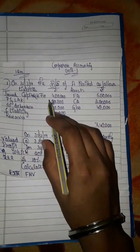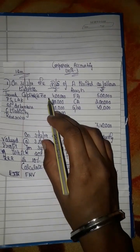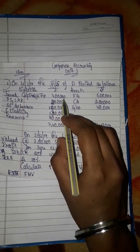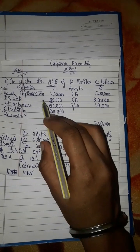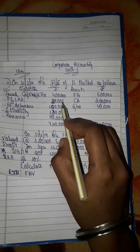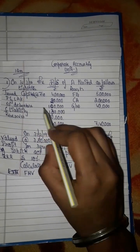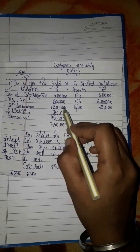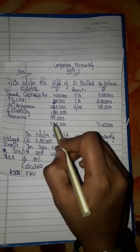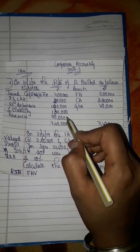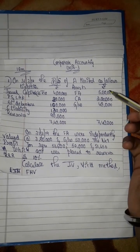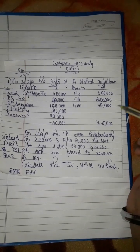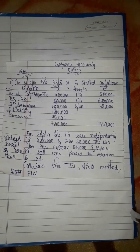The issued capital — equity shares — is 4 lakhs. The profit and loss account is 20,000. The 5% debentures is 1 lakh, and the reserves amount is noted. Fixed assets and current assets including goodwill are on the assets side.